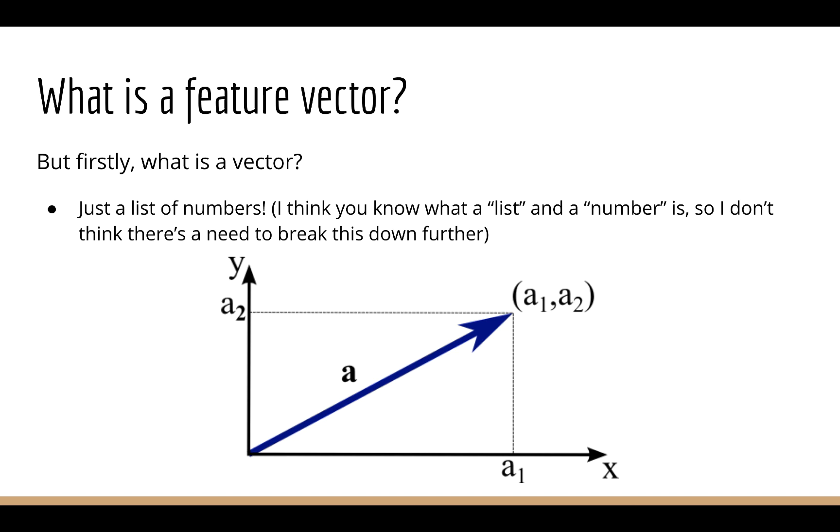First, I want you to consider, what is a vector? A very basic definition is that it's simply a list of numbers. At this point, I think we know what a list is and I think we know what numbers are, so there's no need to break this down further. But importantly, we can visualize vectors by drawing them on the Cartesian plane. This is going to be useful for conceptualizing what machine learning does in the abstract sense.